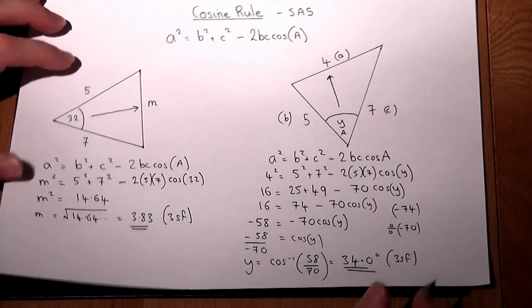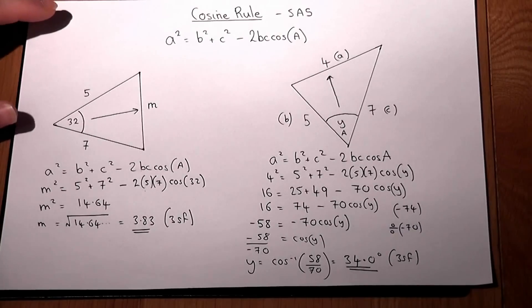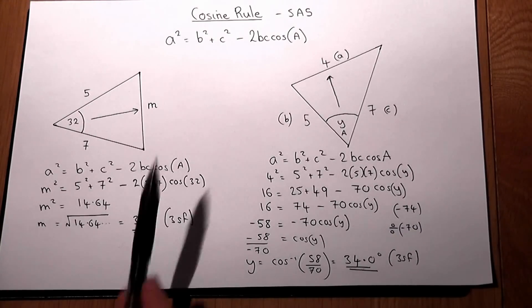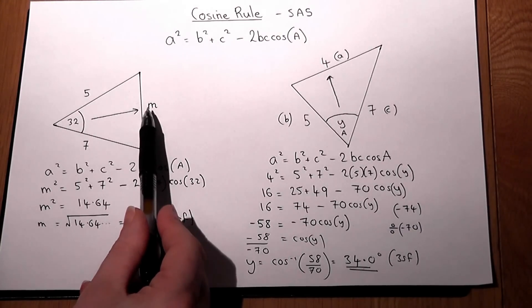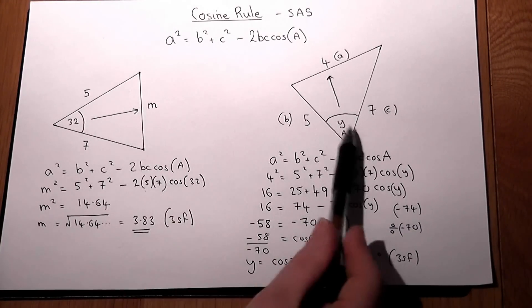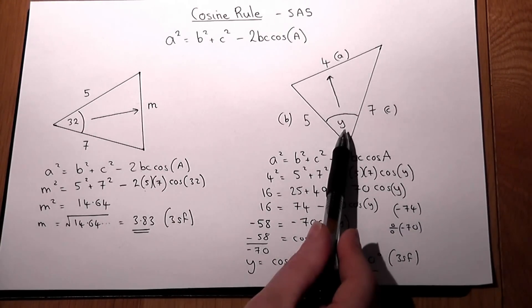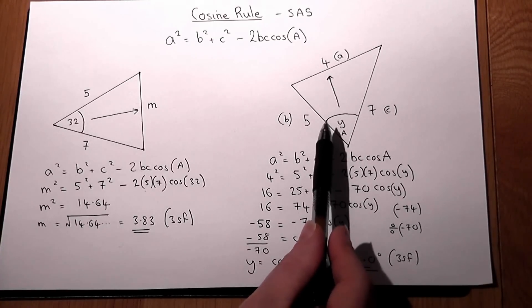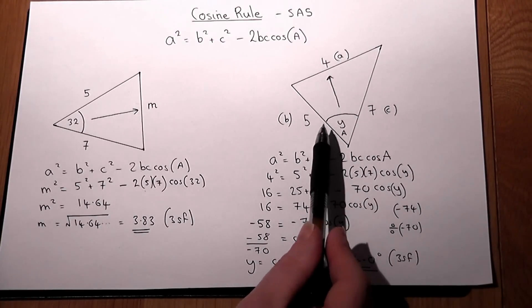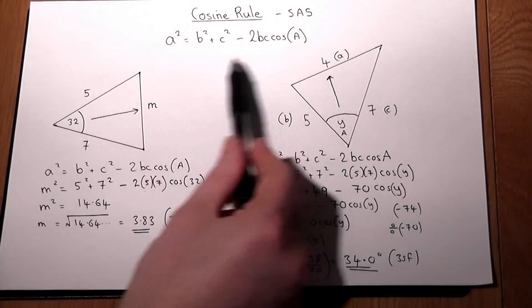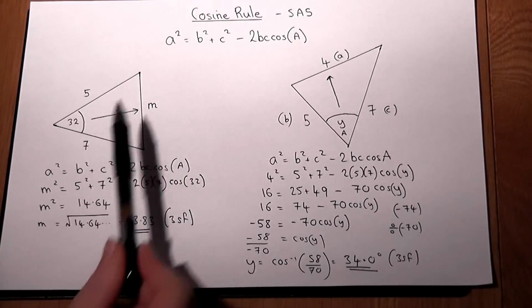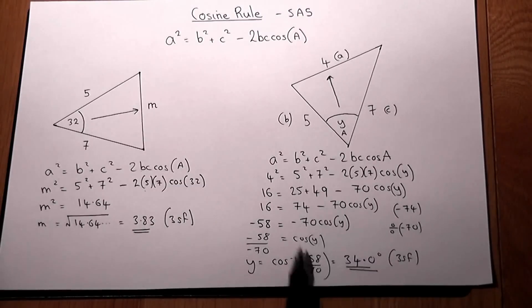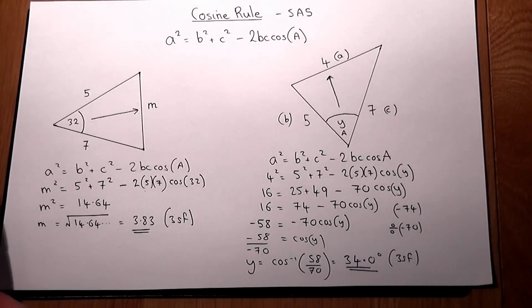So the cosine rule can be used to find a missing side or a missing angle. In another video we apply this to bearings and problems in real life, and also consider a rearranged form of this to speed up this particular calculation.